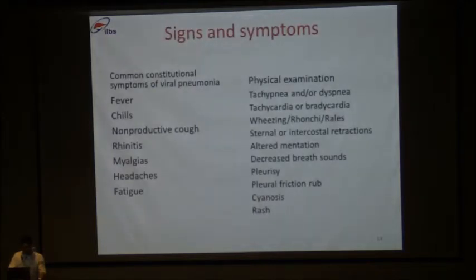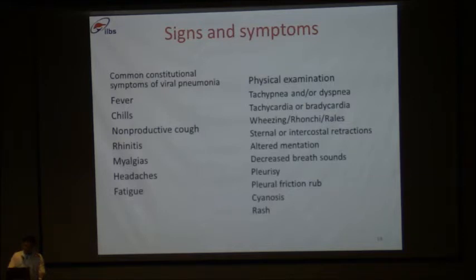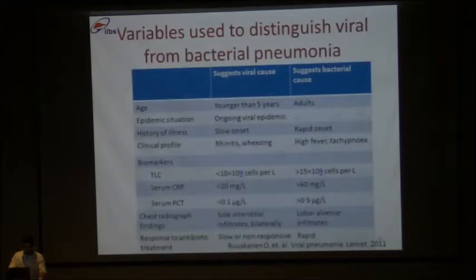On physical examination, we can find tachypnea, dyspnea, tachycardia, wheezing, ronchi, and rales. In the presence of short duration of fever, cold, cough typical of viral pneumonia, if the patient is not asthmatic and you find wheezes on auscultation, then definitely the risk of viral infection is high. There could be sternal or intercostal retractions in children. Altered mental status is sometimes the only manifestation in cirrhotic patients because they may already be drowsy. Decreased breath sounds, pleurisy, pleural friction rub, cyanosis can also occur.